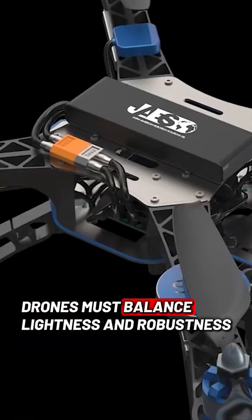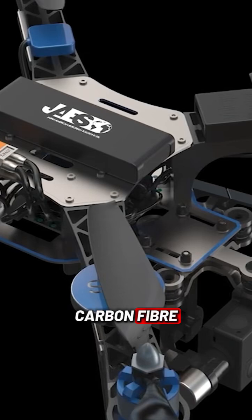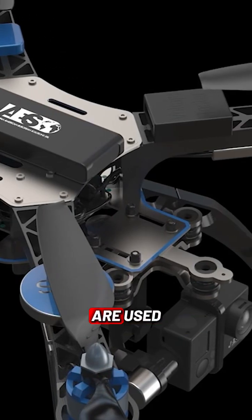Drones must balance lightness and robustness, which is why specific materials like carbon fiber, ABS plastic, or aluminum are used.